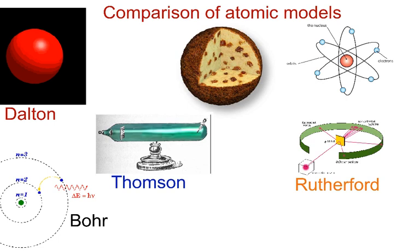The very first model that we looked at was Dalton's model of the atom. Quite simply, he said that the atom is basically a solid sphere, which we could compare to maybe a cannonball, a marble, or a billiard ball.